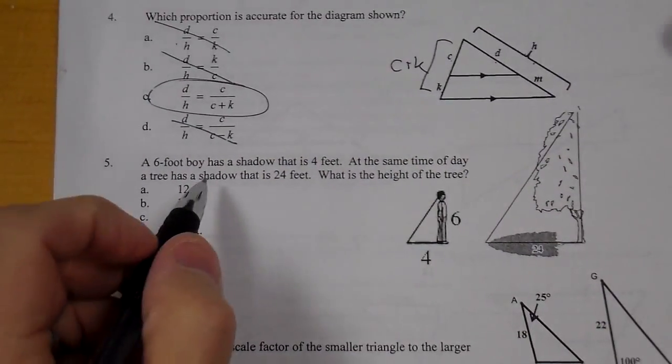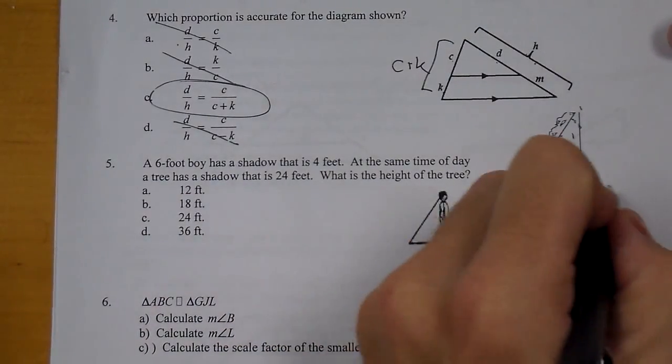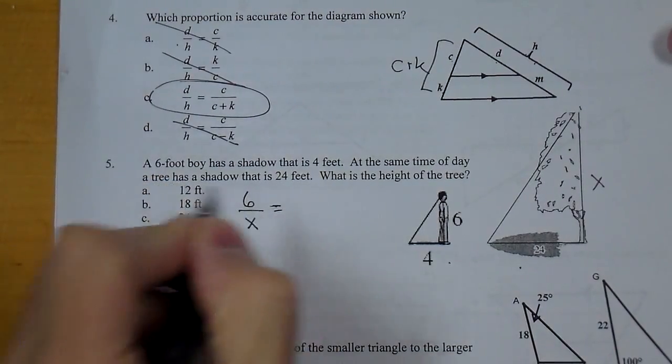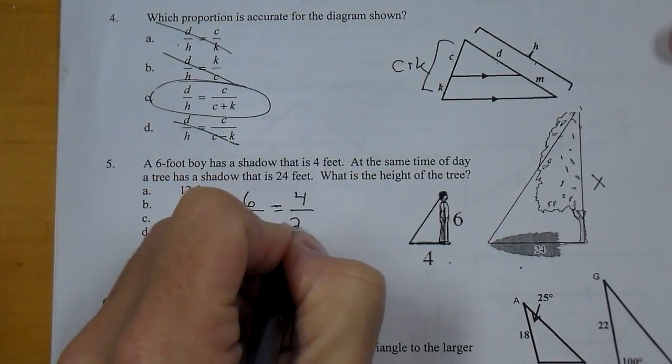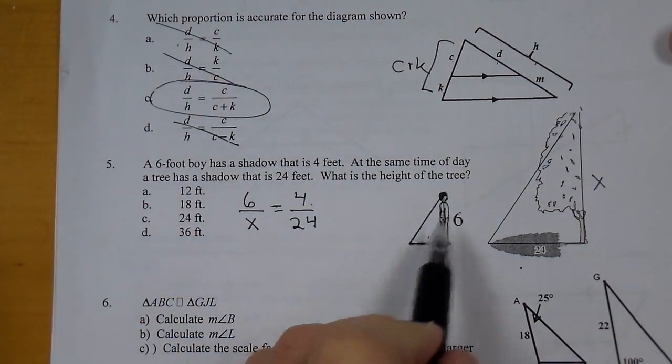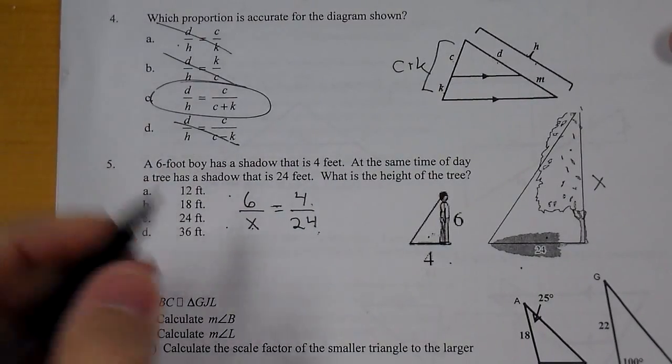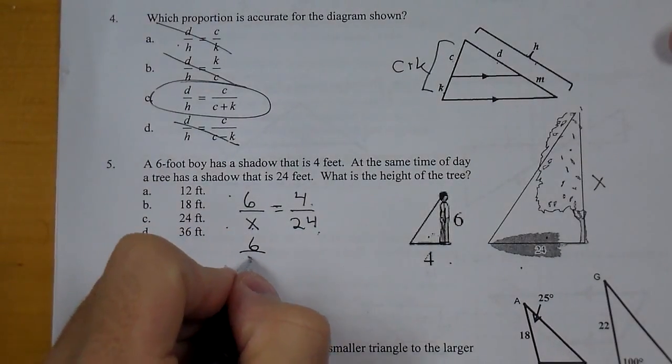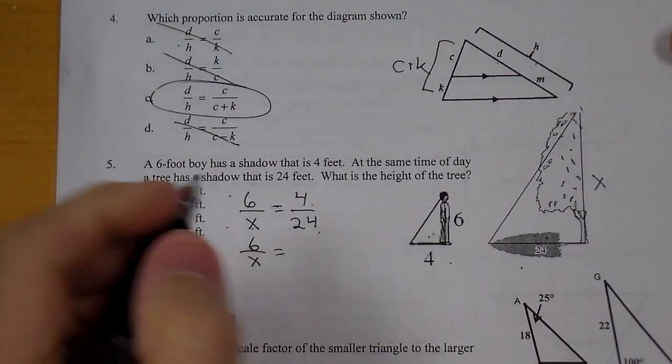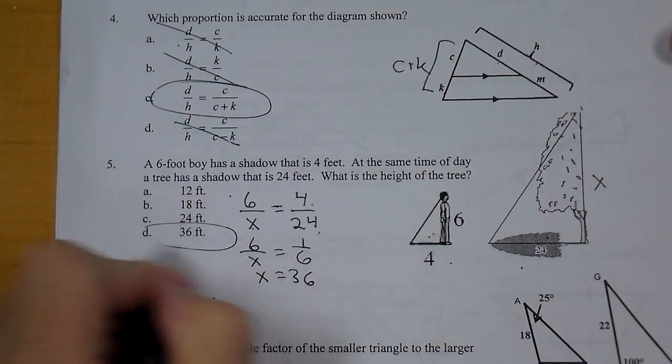For number 5, we have a 6-foot boy has a shadow that's 4 feet. A shadow of a tree is 24 feet. We're solving for the height. So a ratio for the heights is 6 over x. A ratio for the shadows is 4 over 24. Now, these 6 and the 4 both came from the boy. The tree had the x and the 24. Those are both either on the top or either on the bottom. We could reduce. 4 over 24 comes out to be 1 sixth. So x equals 36 feet.